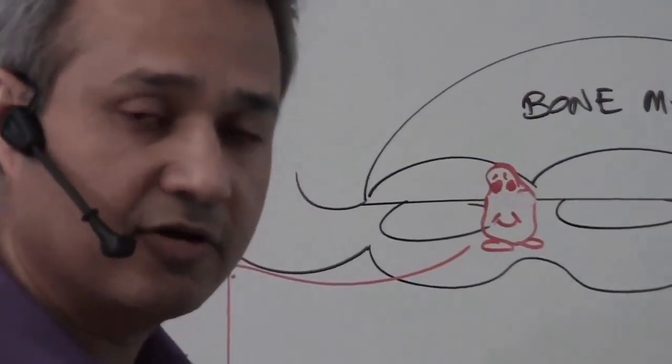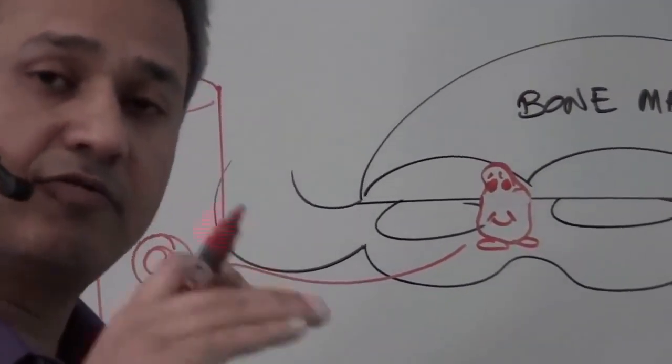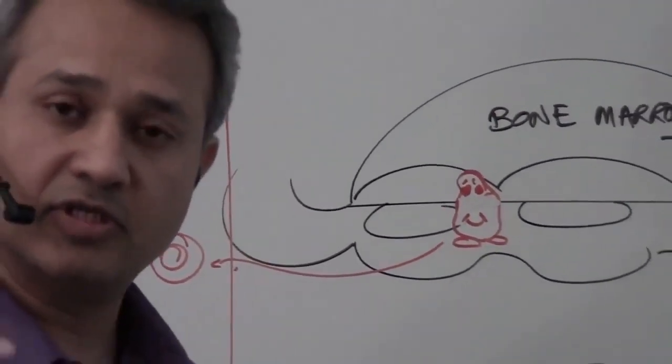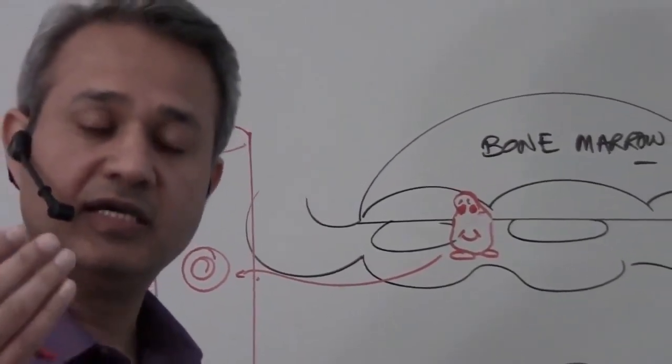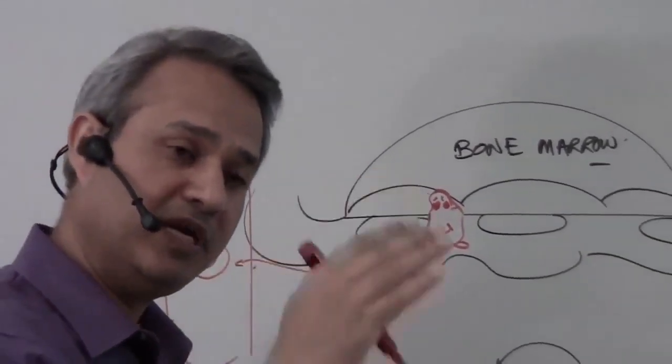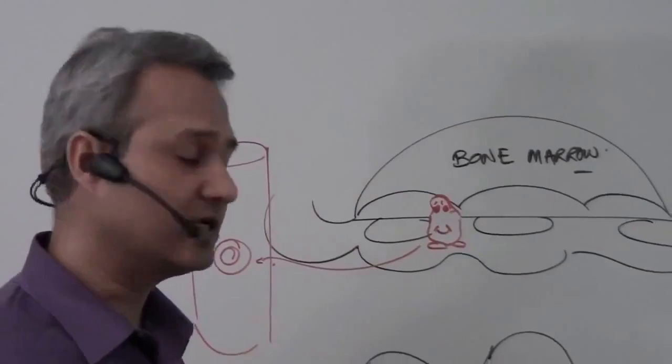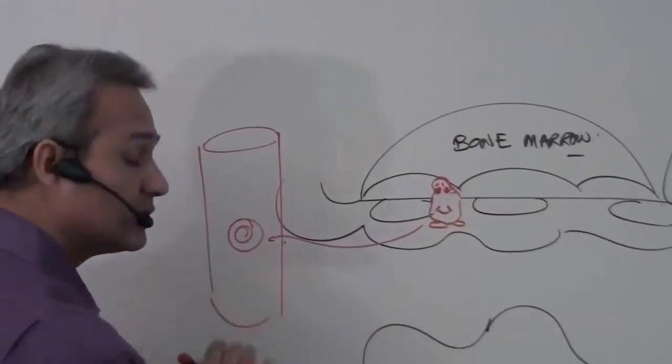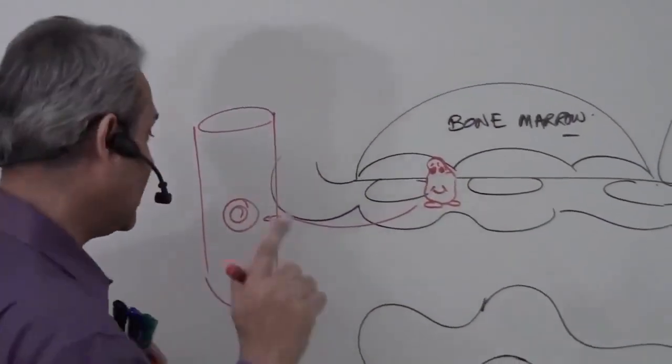This system, the macrophage system, is called the macrophage monocyte system because both of those cells are actually the same cell. Their medium or their presence is different. When the monocyte comes out of the bone marrow and goes into the blood, it is called monocyte.